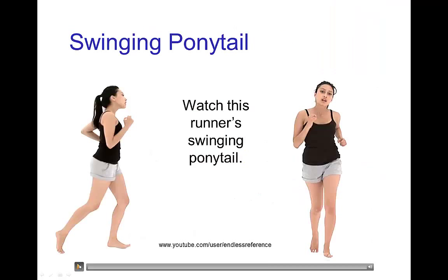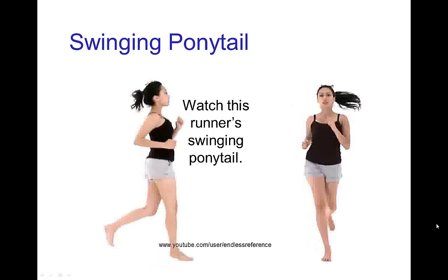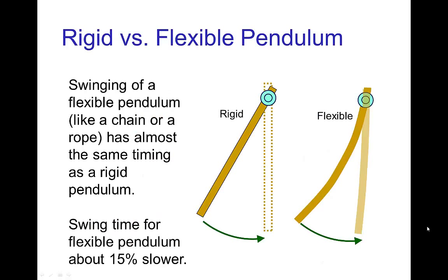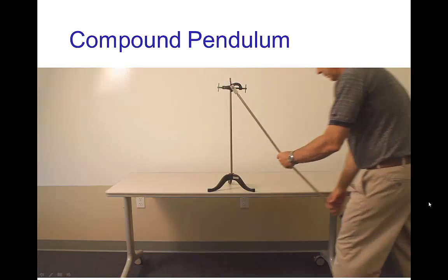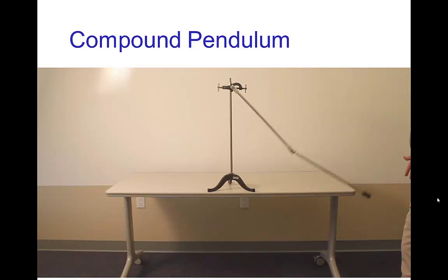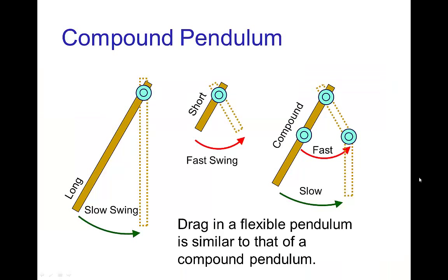Another overlapping action is the swinging of character effects, such as a ponytail or clothing. With these passive overlapping actions, we often have something swinging like a flexible pendulum. A flexible pendulum behaves very similarly to a rigid pendulum — the timing of a swinging chain or rope is very similar to a rigid pendulum. Here is a compound pendulum, which is a pendulum with a hinge in the center — a pendulum attached to a pendulum — and notice the drag, which is rather similar to that of a flexible pendulum like a swinging rope.